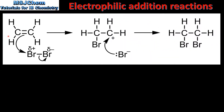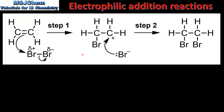Next we look at the mechanism for the reaction between ethene and bromine. This is a two-step mechanism. In the first step we have the formation of a carbocation and a bromide ion. In the second step the bromide ion bonds with the carbocation.